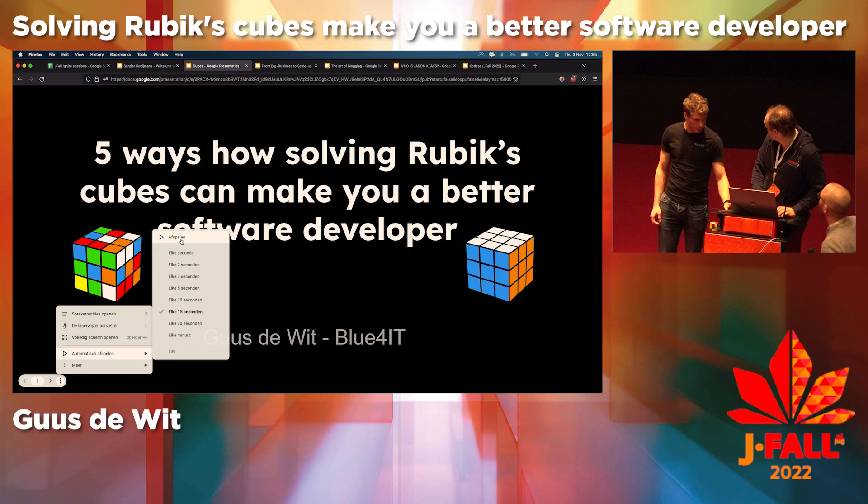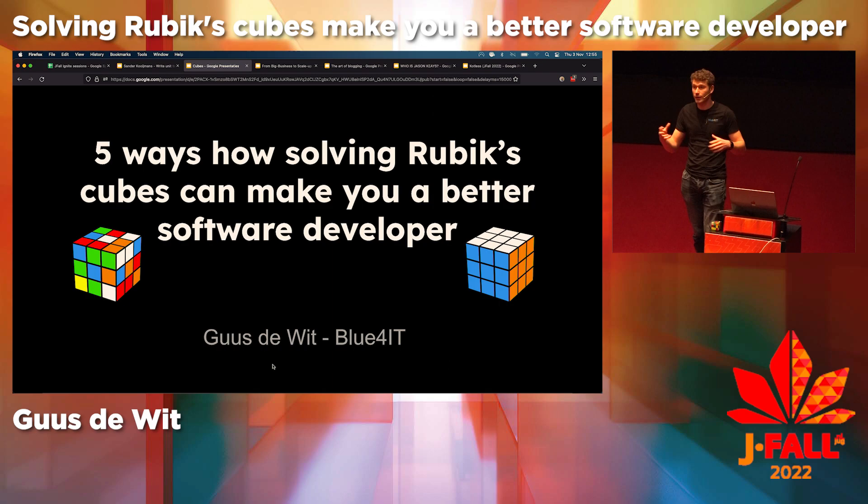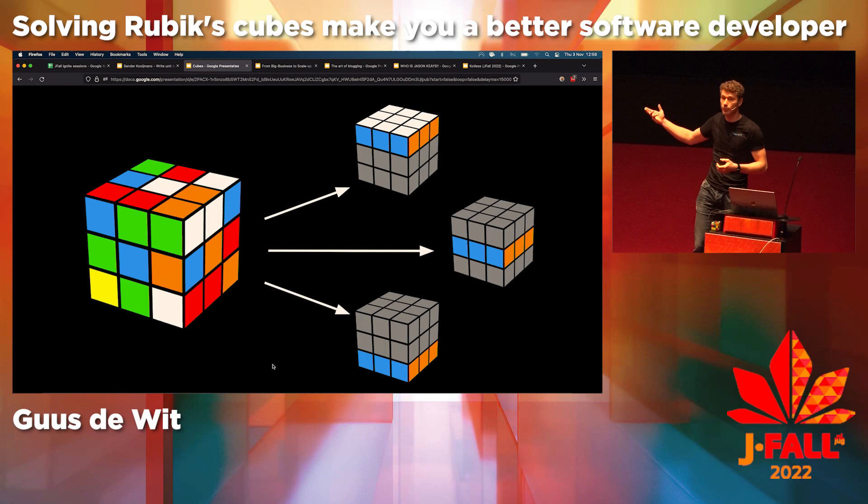I have five minutes to talk to you about Rubik's Cubes — about how to solve them, and about how that makes you a better software developer. Also going to try to solve one at the end. One thing that both software development and cubing have in common is that they are hard problems. The first thing you want to do when you have a hard problem is split it into sub-problems. So that's what we do here with the cube — split into several layers, and if you can solve each, the whole will be solved.